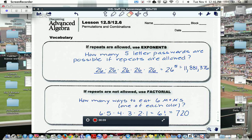If repeats are not allowed, we could use something called factorial. For example, how many ways are there to eat six M&Ms, one of each color? Well, if you laid out one of each color, the first M&M, you'd have six choices.